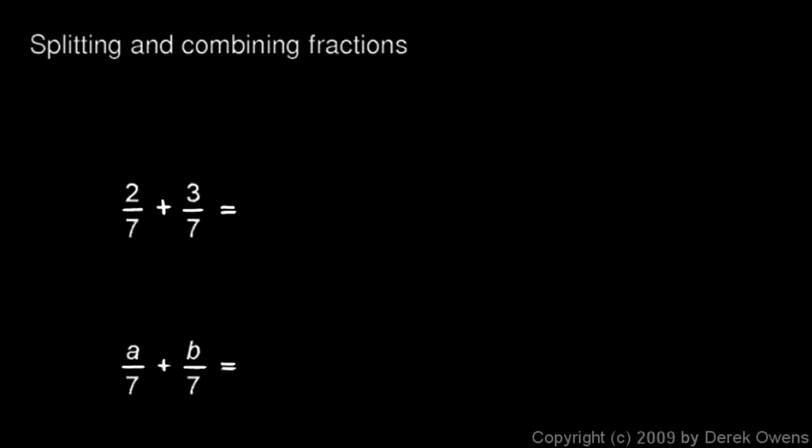For example, 2 sevenths plus 3 sevenths is 5 sevenths. Pretty easy. And that concept works with variables as well as with numbers. a over 7 plus b over 7 would be a plus b over 7.